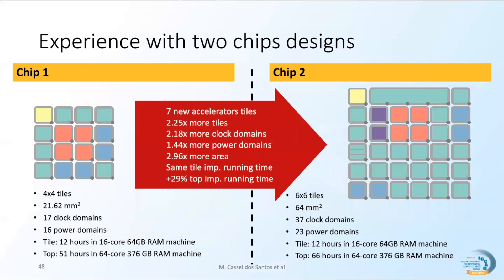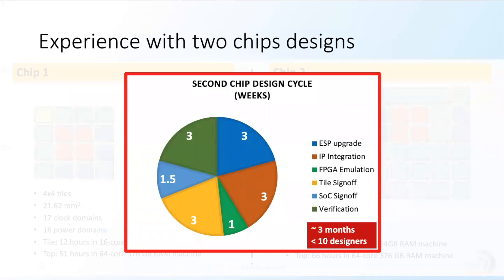Compared to the first chip, in the second chip we added seven new accelerators, scaled to over twice the number of tiles and clock domains, increased the number of power domains by over 40%, and practically tripled the area. We also clustered four tiles to accommodate one very complex accelerator, and three simpler ones share a single tile. The machine running time for tile implementation remained the same at 12 hours using a 16-core 64 GB machine. Top-level implementation time increased by only 29%, from 51 to 66 hours, using a 64-core 376 GB machine. While the second chip is substantially more complex, the design cycle duration and engineering team effort remained comparable, demonstrating the scalability of our proposed methodology.